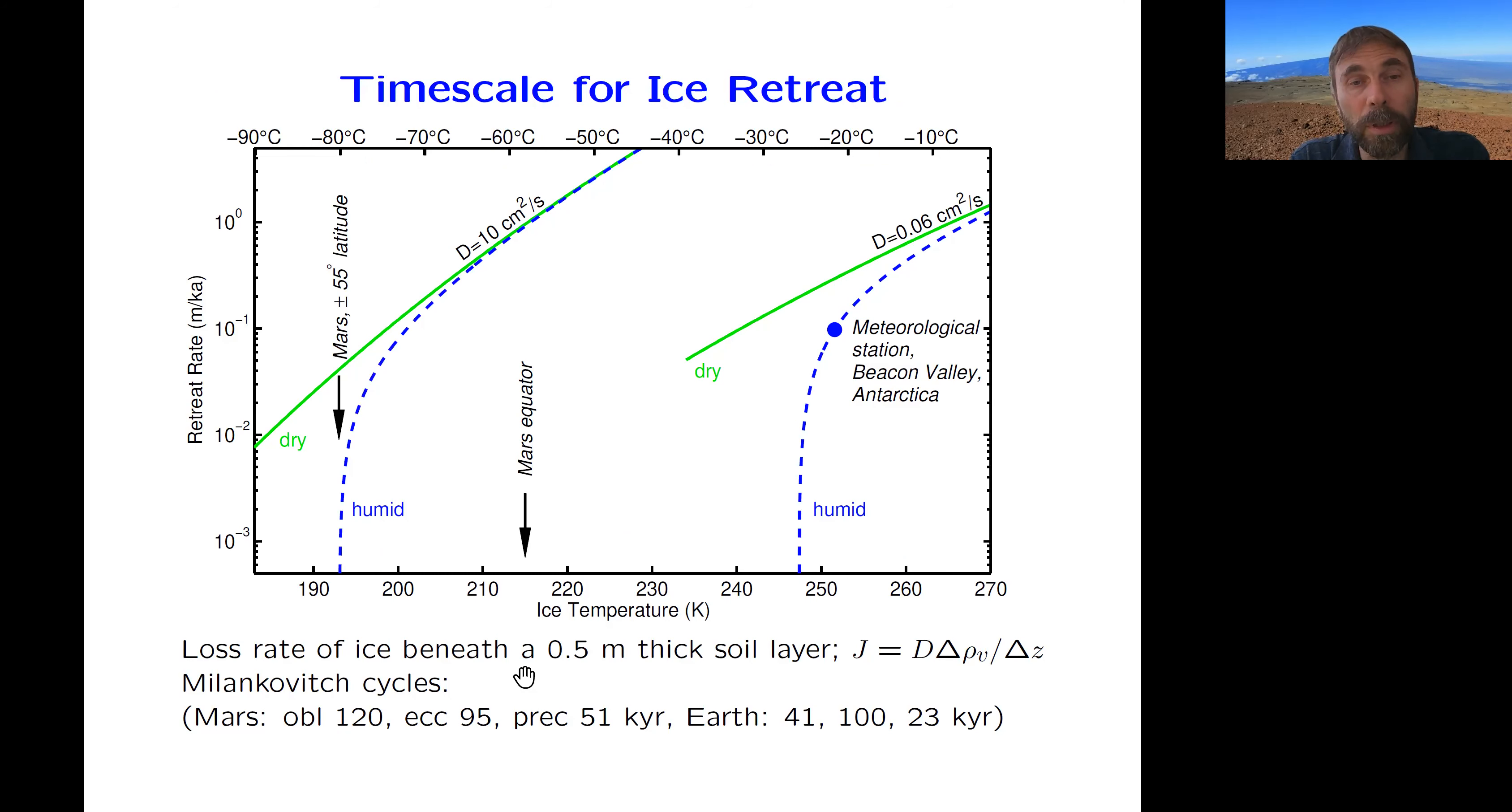Now, if the ice table is out of equilibrium, there will be ice loss or gain. And here are the rates at which this occurs. And the rates are actually similar in the dry valleys and on Mars, because the diffusion coefficient is higher on Mars because atmospheric pressure is lower. And so it's not that different. And so if you talk about rates, so on Mars, I should say that the green line is the retreat rate for a perfectly dry atmosphere and the dashed blue lines are if one takes into account that the humidity will delay or stop even the sublimation loss.